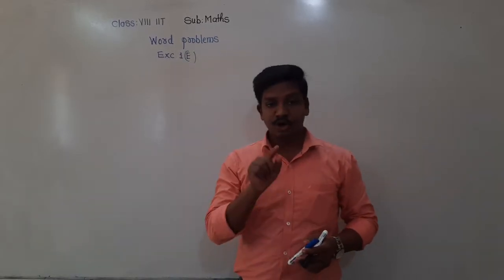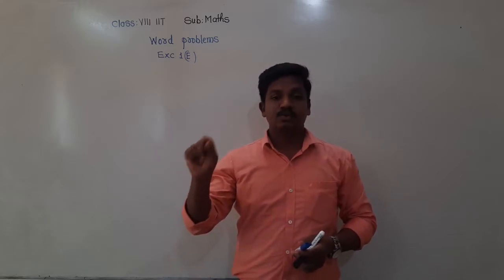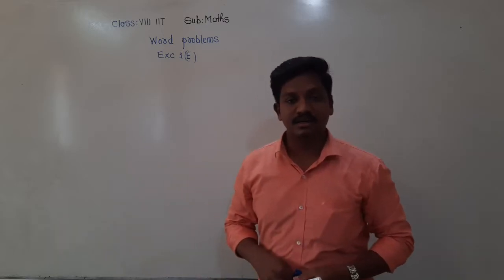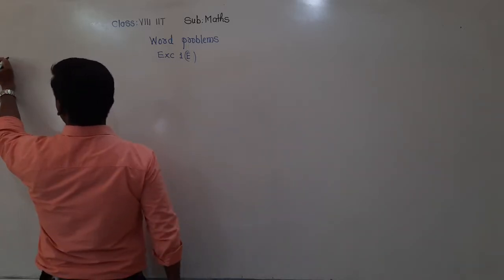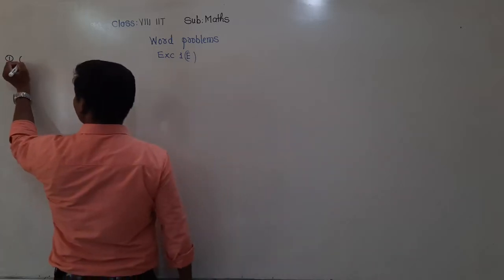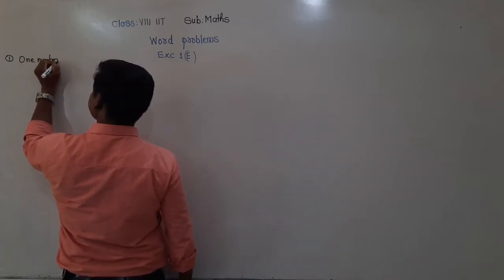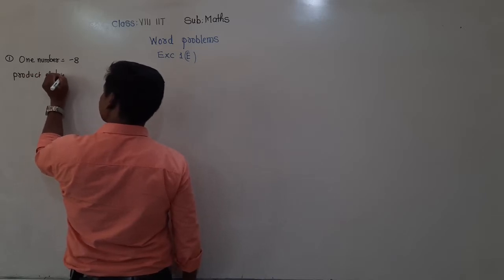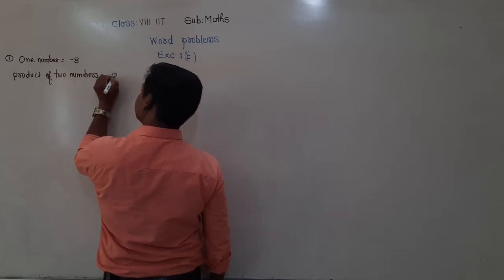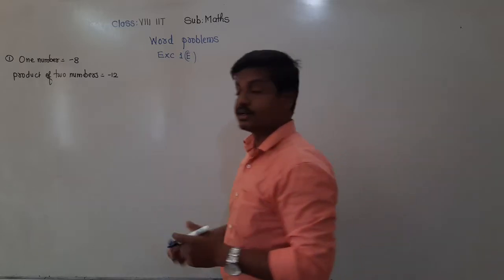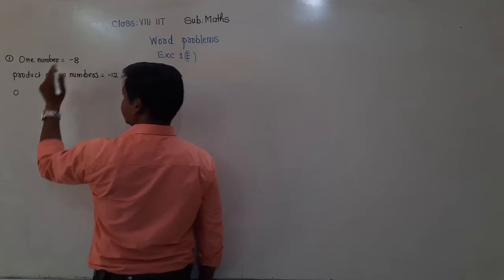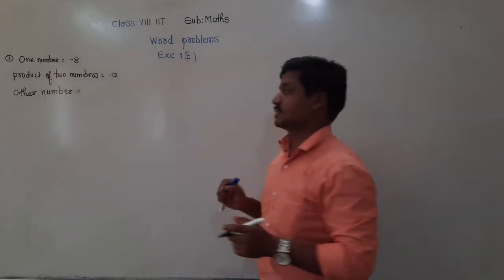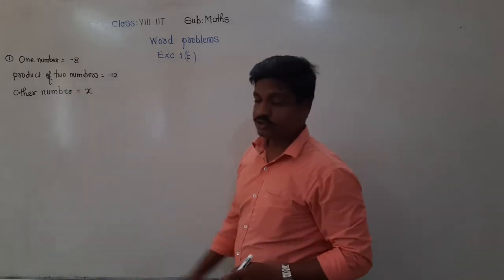The product of two rational numbers is given, that is minus 12. One of the numbers is minus 8, and we have to find the other number. What is given: one number is minus 8, and the product of two numbers is minus 12. Now what we have to find is the other number. Since this number is not given, we can consider it as x. Let the other number be x.